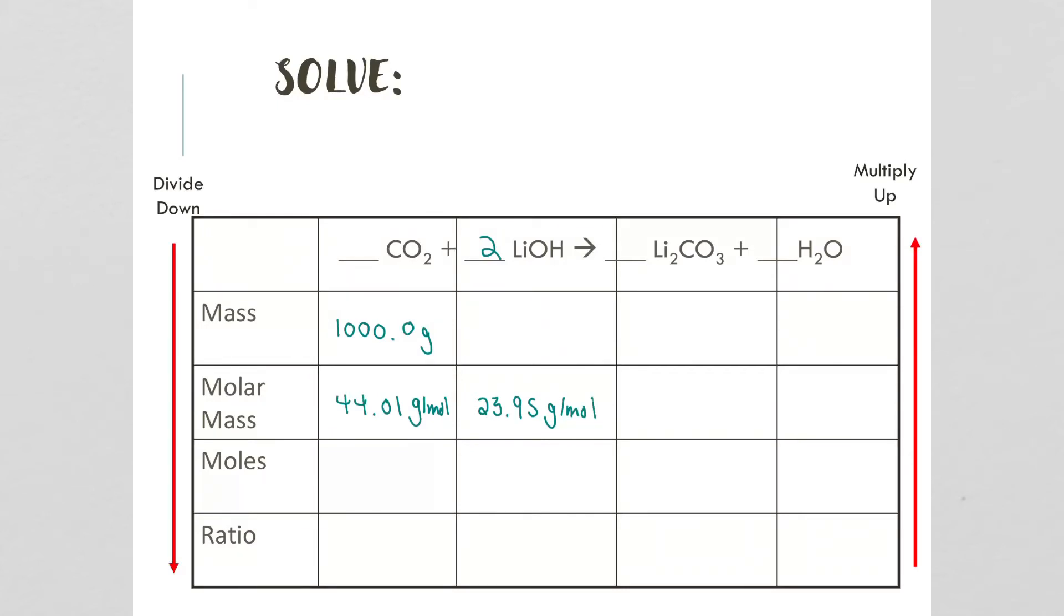Now we start doing our calculations. 1,000 grams divided by 44.01 grams per mole turns out to be 22.7 moles. There is no coefficient, so we'll divide by 1.